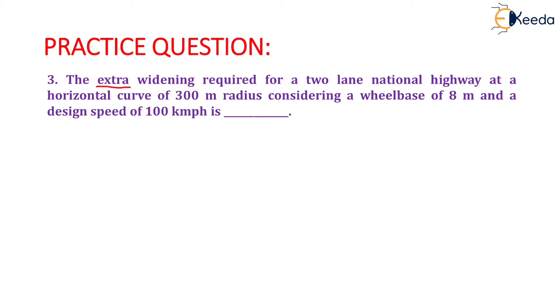Question is given as, the extra widening required for a two lane national highway at a horizontal curve of 300 meter radius considering a wheelbase of 8 meter and a design speed of 100 kilometer per hour is.